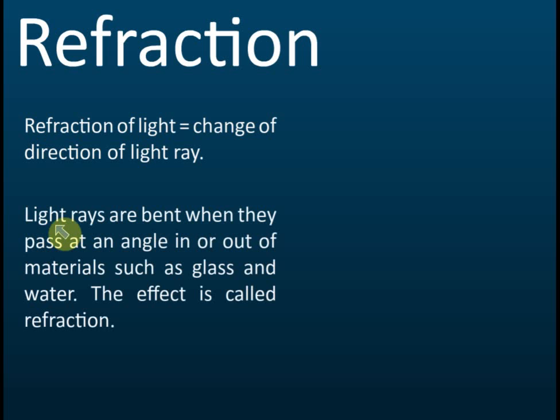So why does light change the direction of propagation? Light rays are bent when they pass at an angle in or out of materials such as glass and water. And this effect is called refraction.